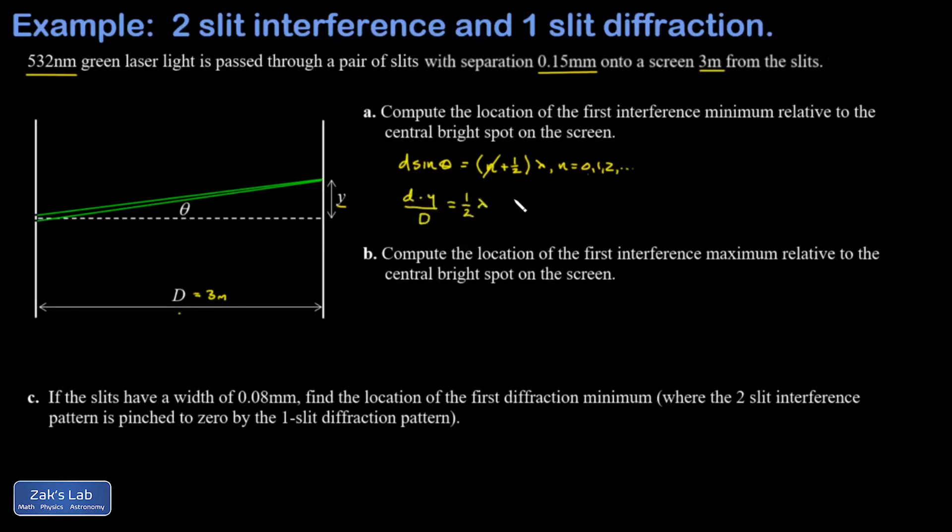Now we just substitute values for all of these things and get everything in the right units of meters as we go. Nanometers are 10 to the negative 9 meters. 0.15 millimeters is 0.00015 meters. And I get 0.00532 meters, which I could write as 5.32 millimeters.